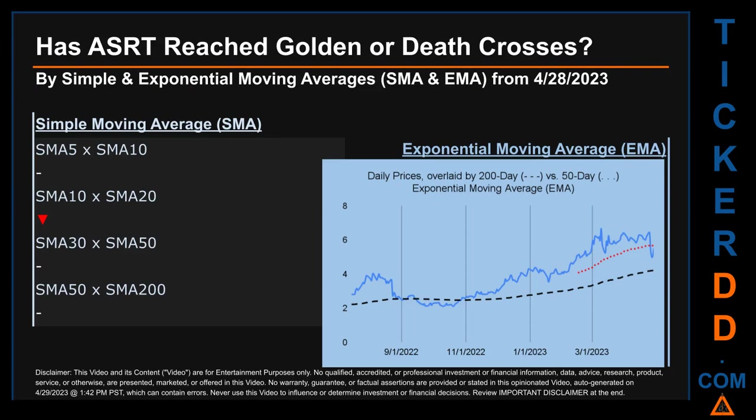My capitalistic brothers and sisters, join the TickerDD army — subscribe today. Now back to the video: has ASRT's price reached golden or death crosses? Golden cross and death cross are basic signals that compare average prices across two specified trade-day ranges — a short-term versus a long-term range; for example, five-day versus ten trade days. Essentially, a golden cross is a bullish signal that appears when a ticker's short-term moving average crosses above its long-term average. Vice versa, a death cross is a bearish signal when the short-term crosses below its long-term moving average.